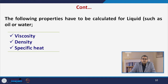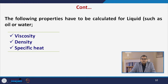There are several other properties which have to be calculated for liquids. If you are transporting oil or water, you need to look at the viscosity aspect — if the material is highly viscous, you either need to preheat it or apply more power for transportation. Similarly, density and specific heat are important. All these different properties need to be examined prior to designing the pipeline for liquid transport.